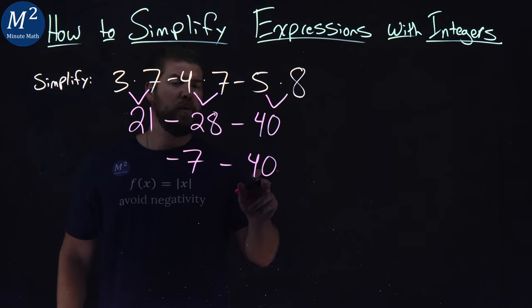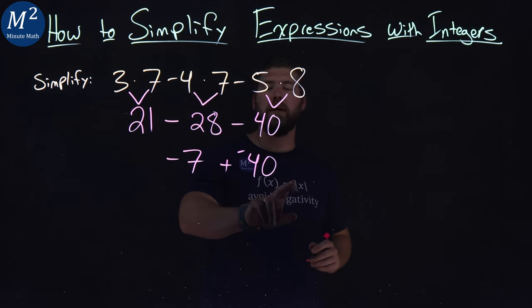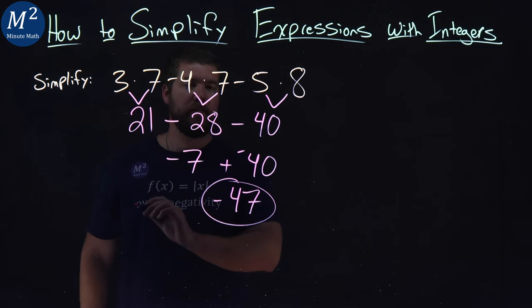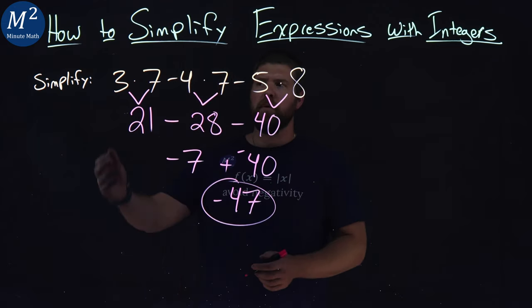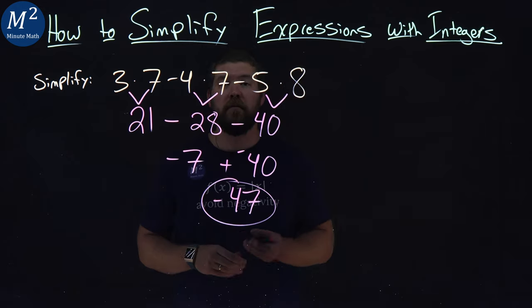Negative 7 minus 40 is the same thing as adding a negative 40. So we have negative 7 plus a negative 40, which is a negative 47. And there we got it. 3 times 7 minus 4 times 7 minus 5 times 8 is equal to a negative 47.